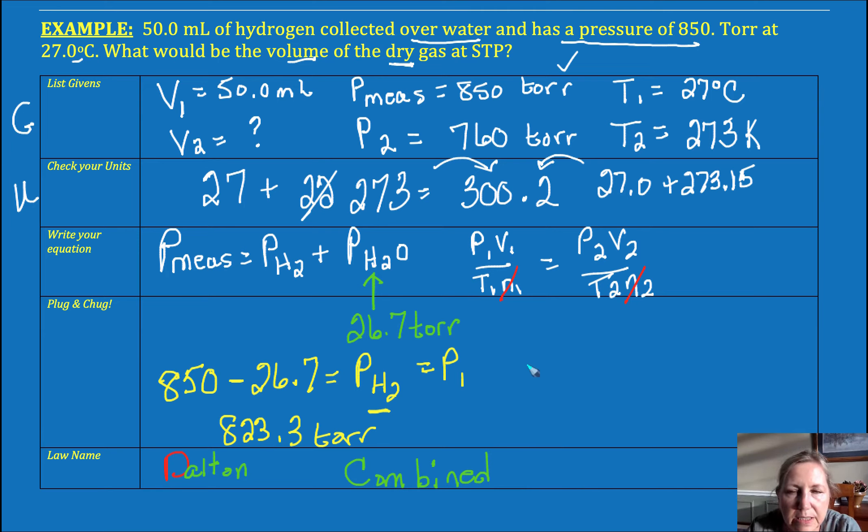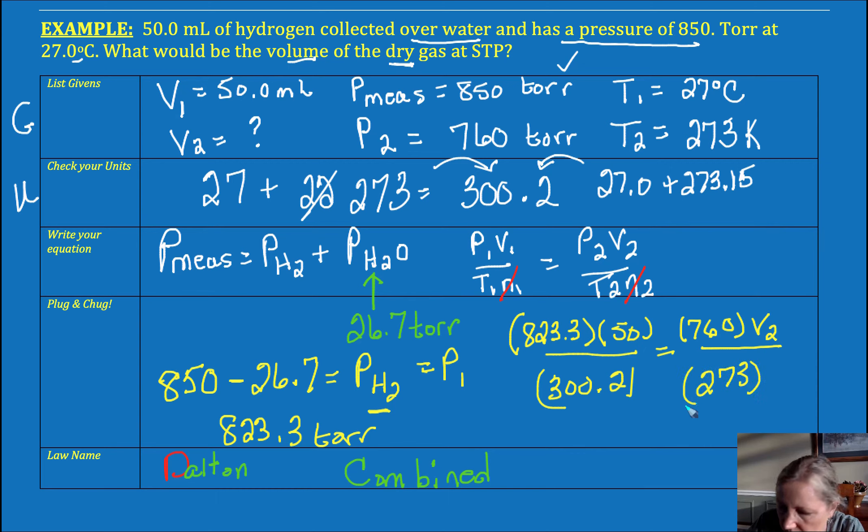So now I'm going to substitute this into the combined gas law. You could have to substitute this into a Boyle's law, a Gay-Lussac's law, or an ideal gas law. Any of the other types of gas laws that you would learn in this unit become fair game for the application or combination of Dalton's law with that. So now I'm going to plug these in. So my P1 is 823.3. My V1 was 50. My T1 was 300.2. So I need to know my, I've got my new pressure was 760 because it told me it was STP. I'm solving for my V2. And my T2 is 273.